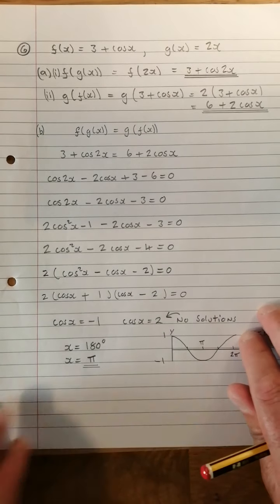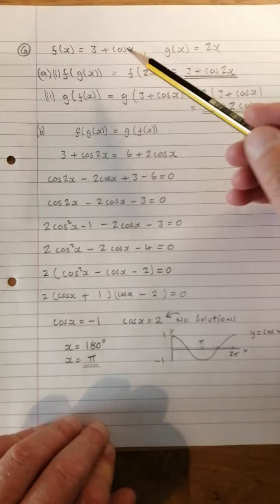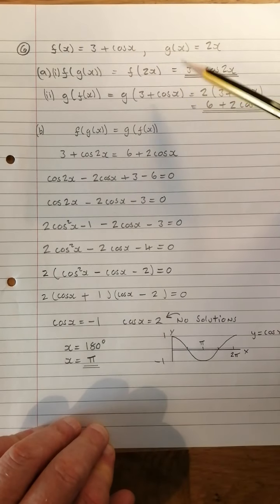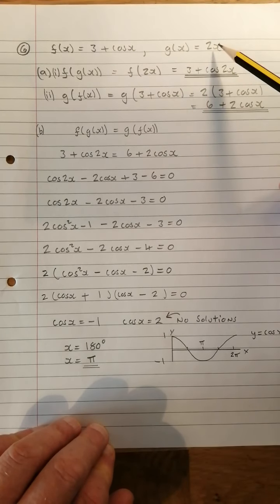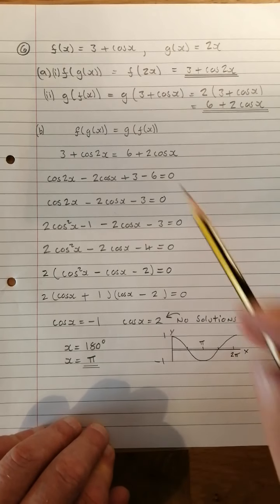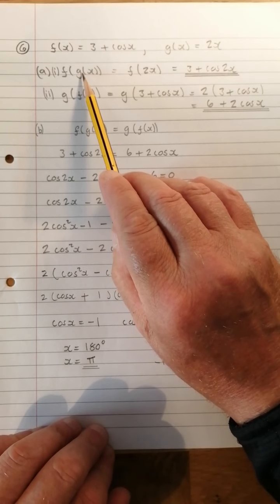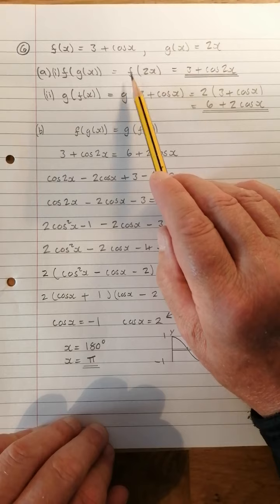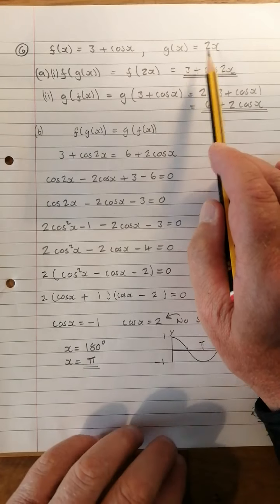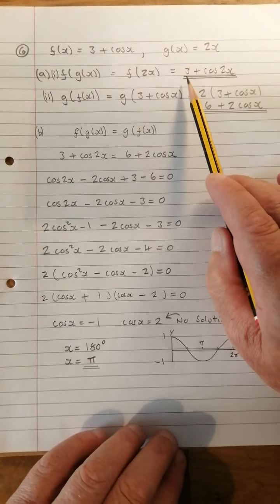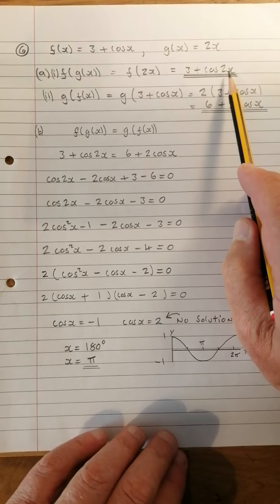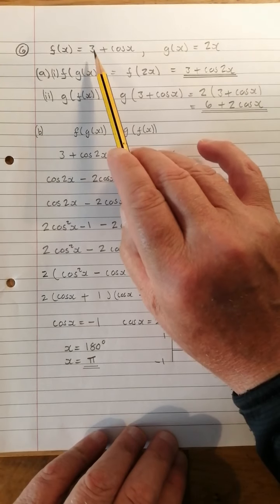Let me recap: f of x is 3 plus cos x, g of x is 2x. So let's do part 1, f of g of x. f of g of x is f of 2x, so it's 3 plus cos 2x. f of x is 3 plus cos x, so replace x with 2x, you get 3 plus cos 2x.